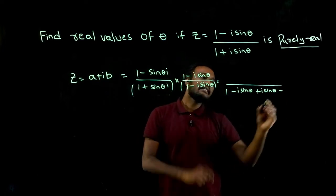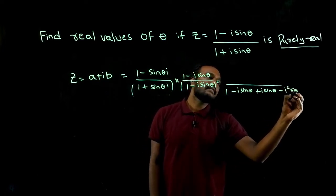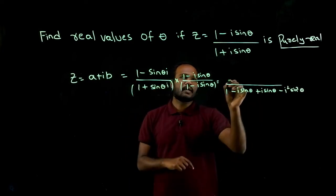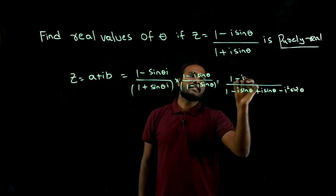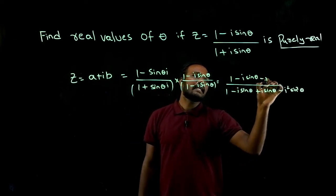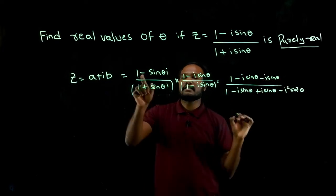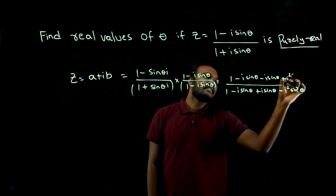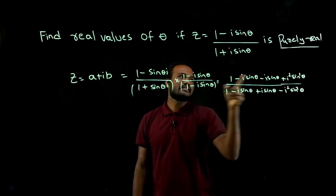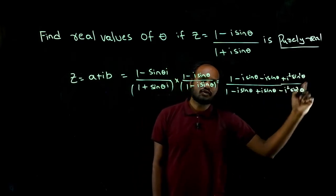i into i is i square sine square theta. In the numerator, one into one is one, one into minus i sine theta is minus i sine theta, minus i sine theta into minus one is minus again i sine theta, minus into minus is plus i square sine square theta. i into i is i square, sine into sine is sine squared.